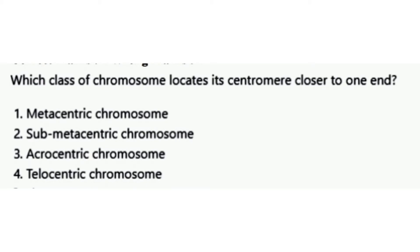Our first question is: which class of chromosome locates its centromere closer to one end? The options are metacentric chromosome, submetacentric chromosome, acrocentric chromosome, and telocentric chromosome. The correct answer is option 3, that is acrocentric chromosome.